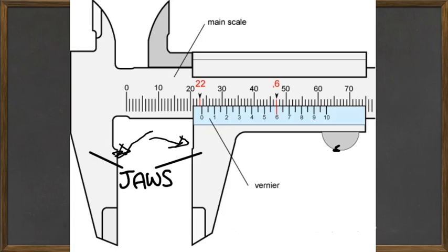The blue scale right here is called the vernier scale, and the white scale, the big one, is called the main scale. So that is something very important as well that you have to remember as we go through this.